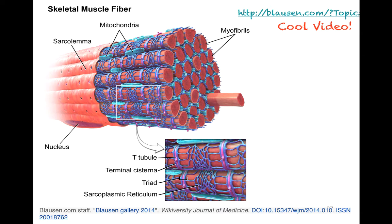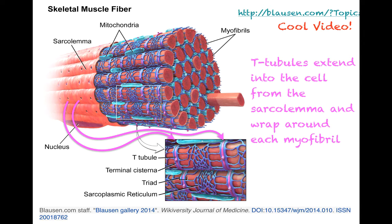Here's another image of what a muscle fiber looks like. The sarcolemma is the cell membrane around it, and you can see invaginations; the purple structures are the T-tubules. The T-tubules extend into the cell from the sarcolemma and wrap around each myofibril, so that once you get that nervous impulse, they are all coordinated and can all contract at once. If you're interested, check out the video by Blausen, who made a really nice animation of this.